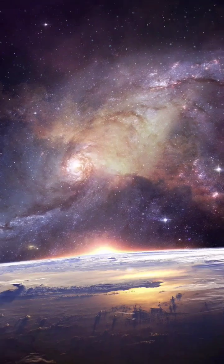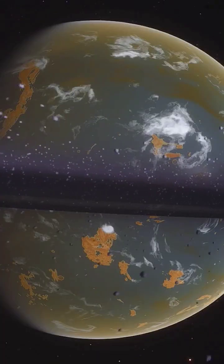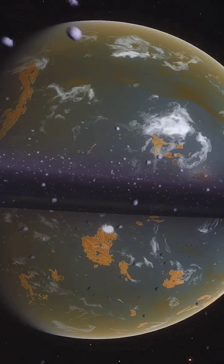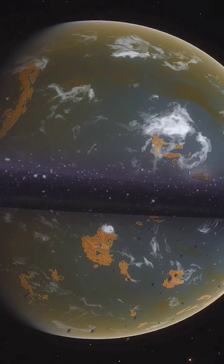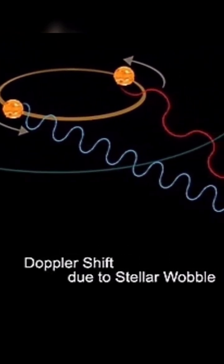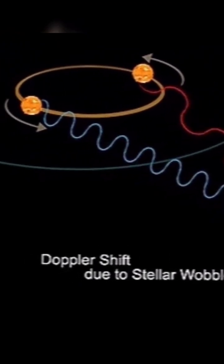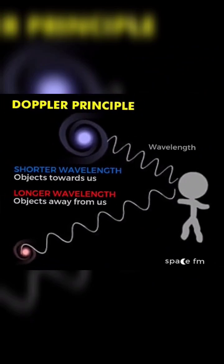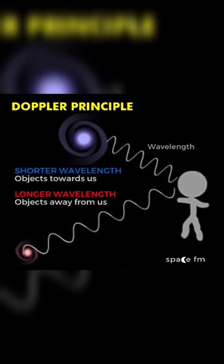There are several methods used to identify exoplanets. One of the most common methods is the radial velocity method, also known as the Doppler method. This method measures the periodic changes in a star's radial velocity caused by the gravitational pull of an orbiting planet.